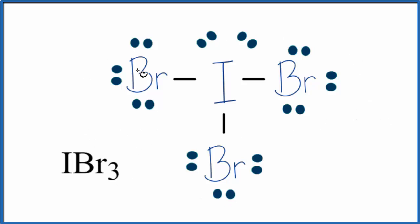So we start out with the Lewis structure, and we can see from our Lewis structure here that we have the iodine, three bromine atoms around it, and we have these two lone pairs here. Iodine can have more than eight valence electrons, so it's okay that it has this expanded octet.